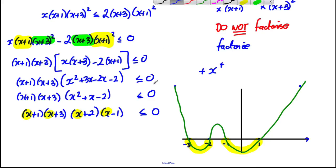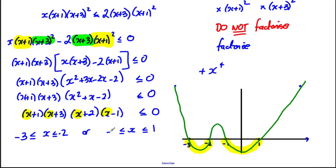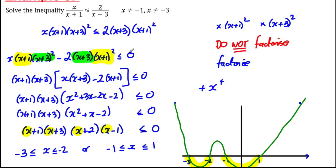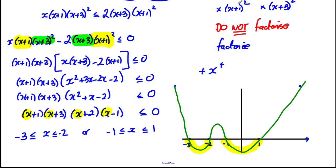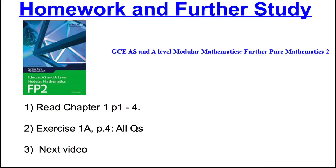From the graph, the regions less than or equal to zero are: negative 3 is less than or equal to x, which is less than or equal to negative 2; and negative 1 is less than or equal to x, which is less than or equal to 1. However, we must remember the domain restrictions from the original question: x cannot equal negative 1 and x cannot equal negative 3. So the inequalities at those endpoints must be strict: negative 3 is strictly less than x less than or equal to negative 2; and negative 1 is strictly less than x, which is less than or equal to 1.